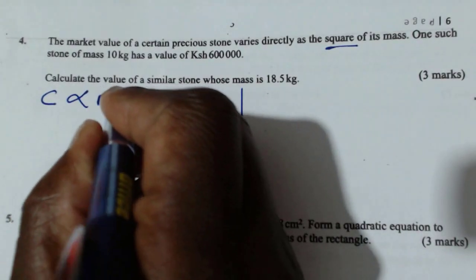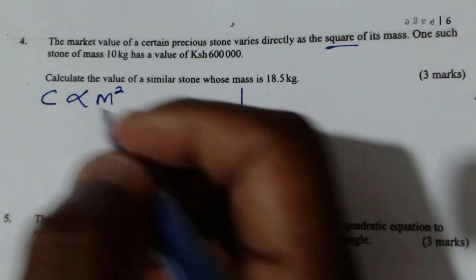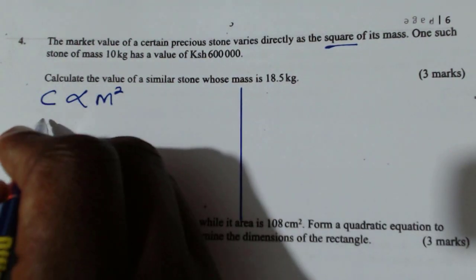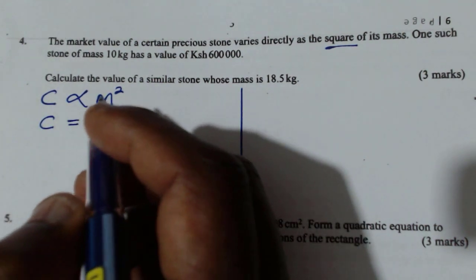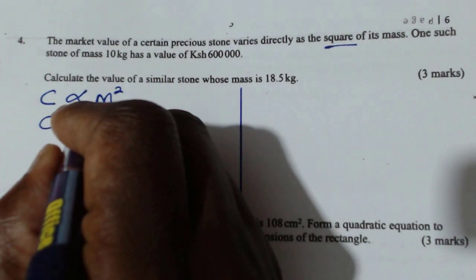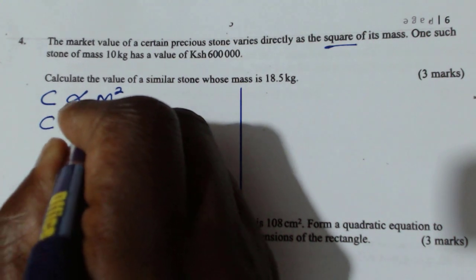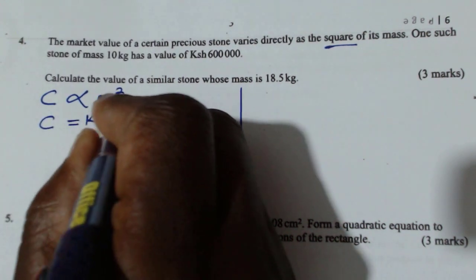That is how you write it. When you remove this sign of proportionality, you have to introduce the constant of proportionality, which we will let to be K times m squared.